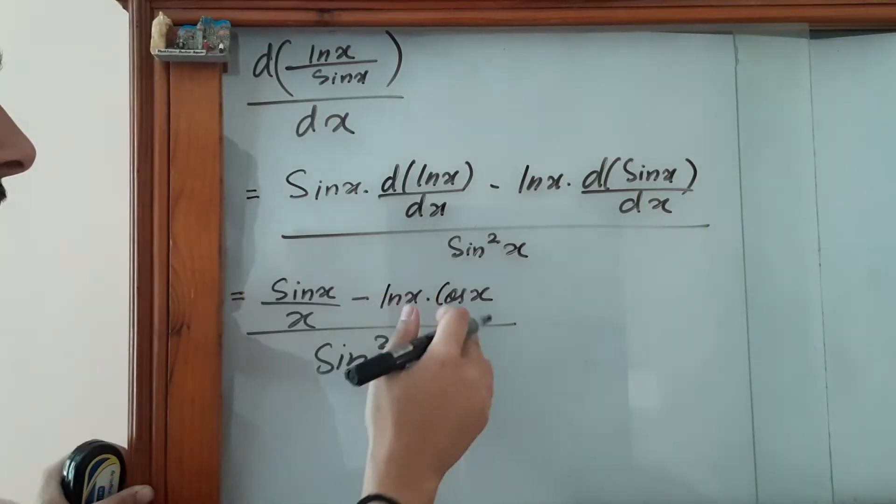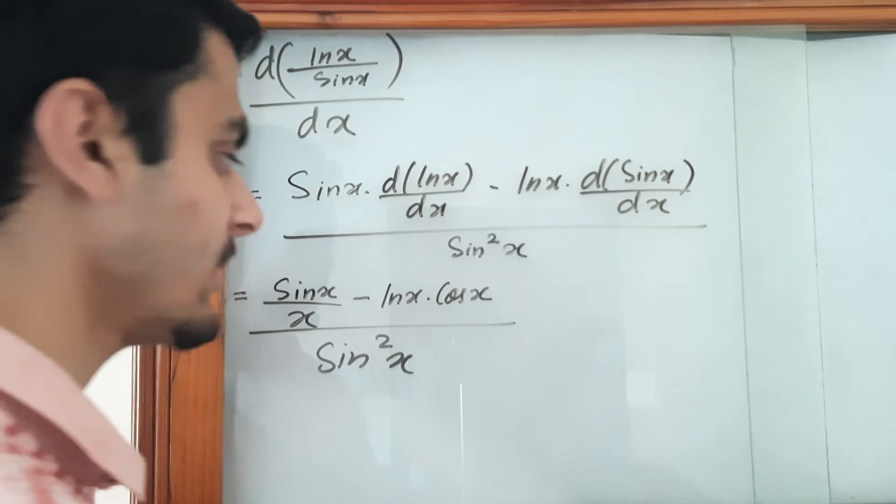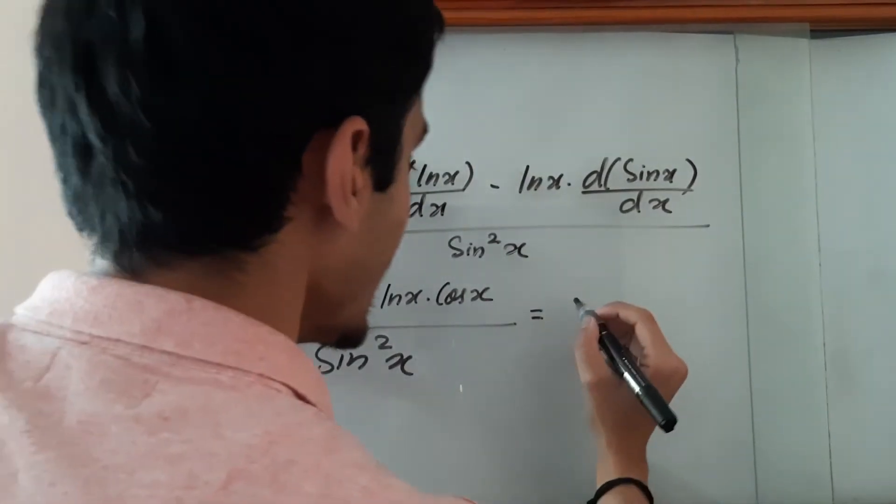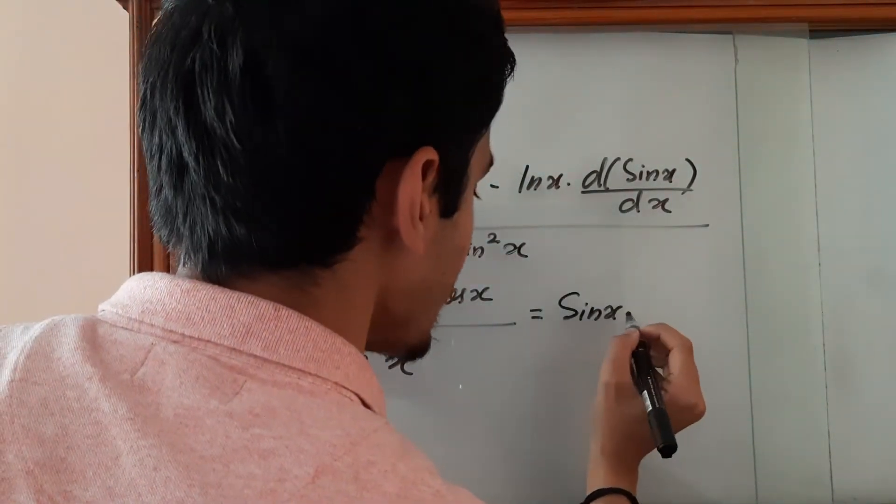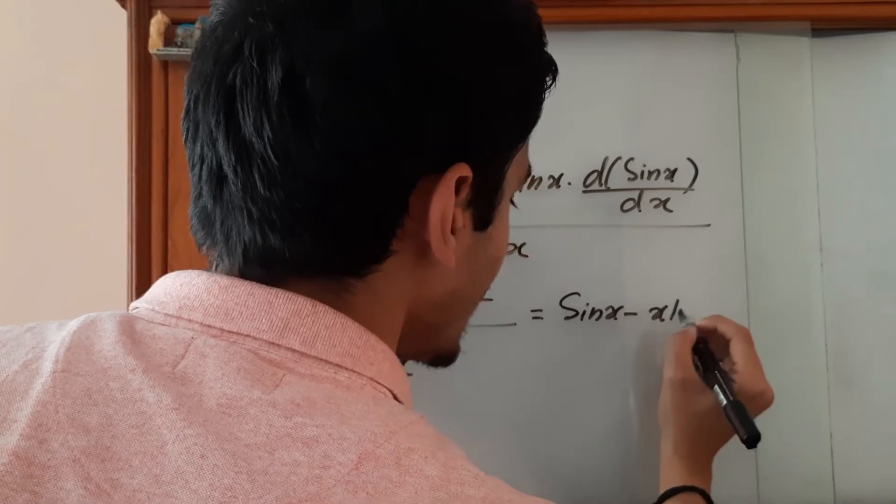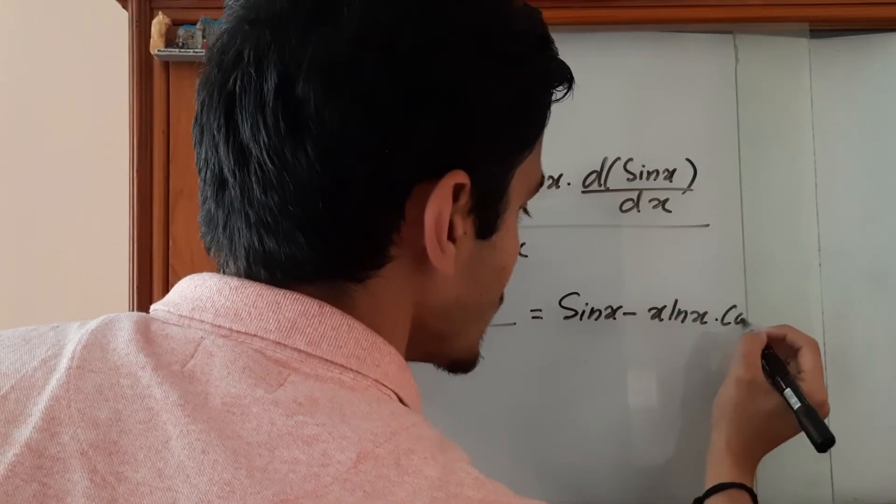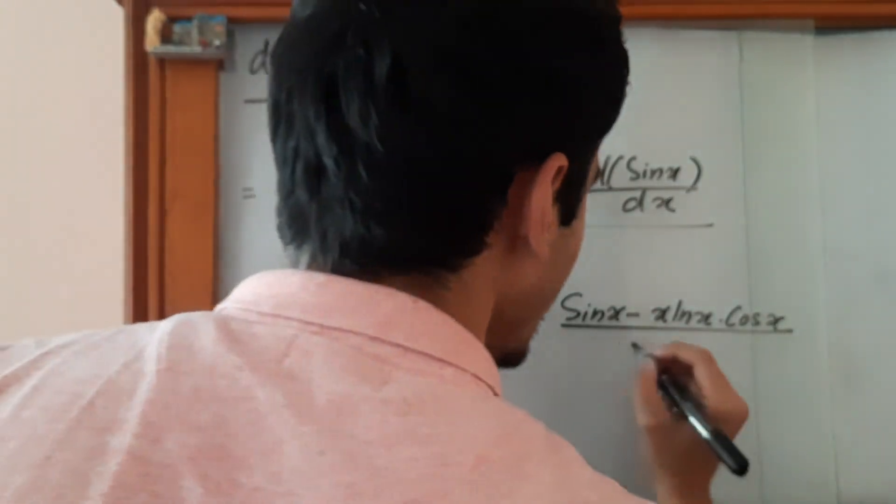You can leave the answer in this form as well, but let's simplify a little more. So we get sin(x) minus x·ln(x)·cos(x). I've taken the LCM here.